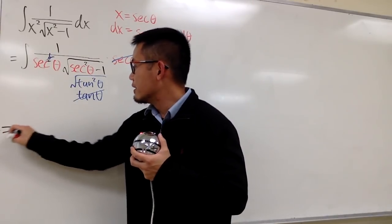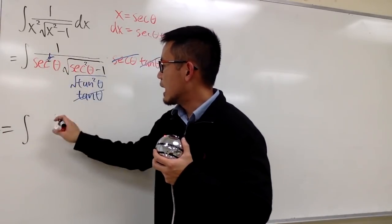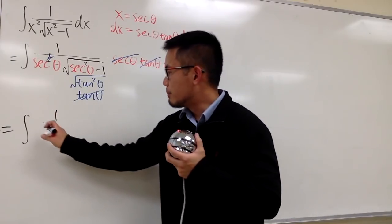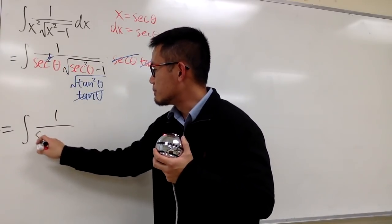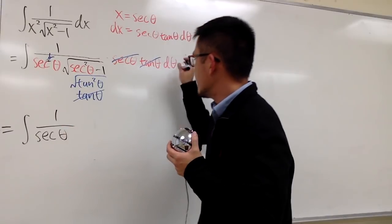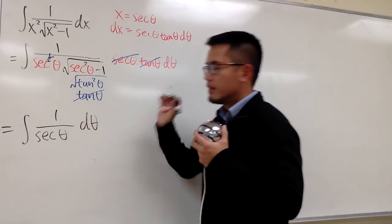And all in all, we will end up to have, this is the integral, on the top we have 1, and on the bottom, we just have secant to the first power theta, and then this is d theta, like that.